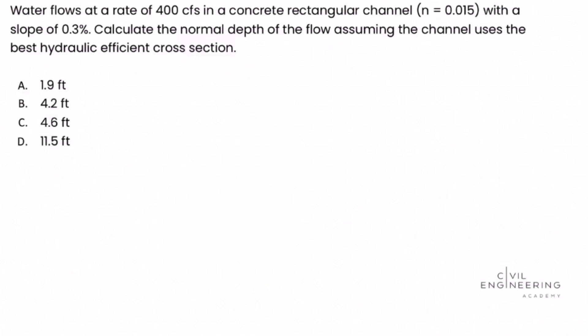Water flows at a rate of 400 CFS in a concrete rectangular channel, n equals 0.015, with a slope of 0.3%. Calculate the normal depth of the flow, assuming the channel uses the best hydraulic efficient cross section.